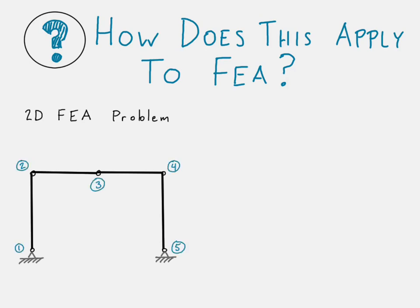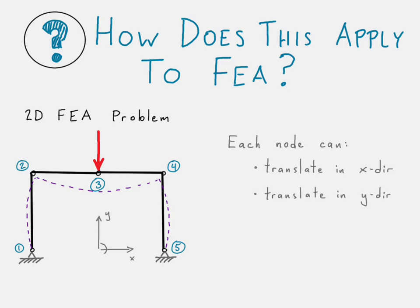So simple frame structure here. Let's go ahead and assume that we apply a load there. And there is our resulting deformed configuration there with that dashed purple line. And we're going to say that each of these nodes can do the following. It can translate in the x direction, it can translate in the y direction, and it can rotate about the z-axis. And that z-axis is our out-of-plane axis. So it's in plane rotation, rotating about the out-of-plane axis.